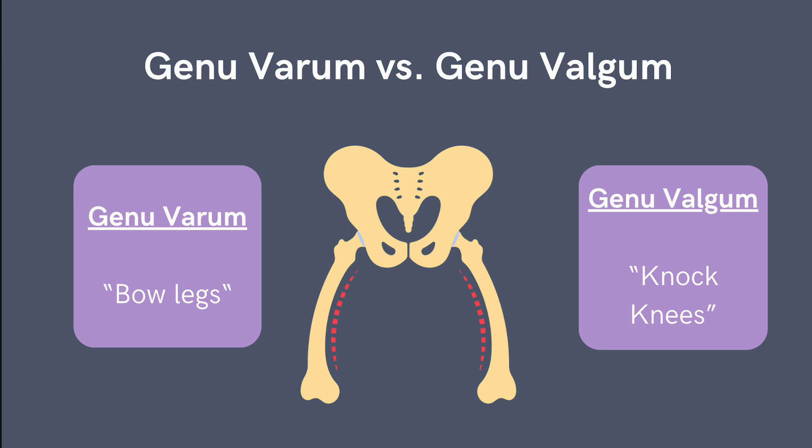With genu valgum, also known as knock knees, the knees angle inward — think of the 'gum' making those knees stick together to remember this one. Genu valgum is most often seen in children ages three to five, and it typically resolves by age seven or eight.